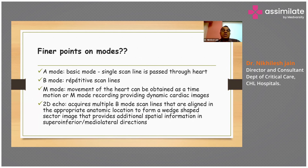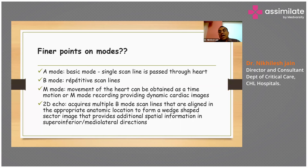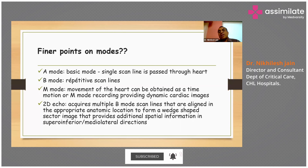Regarding the modes: A mode is a basic mode where a single scan line is passed through the heart. B mode comprises repetitive scan lines. M mode records movement of the heart as a time-motion recording, providing dynamic cardiac images. With 2D echo, you acquire multiple B mode scan lines aligned in the appropriate anatomic location, forming a wedge-shaped sector image which is conical, providing additional spatial information in superior-inferior and medial-lateral directions.